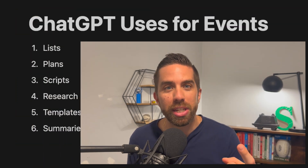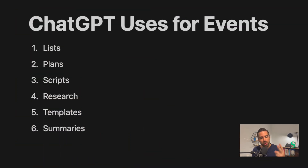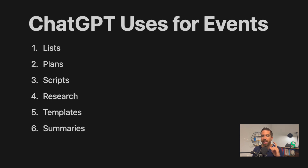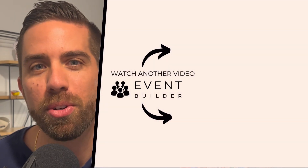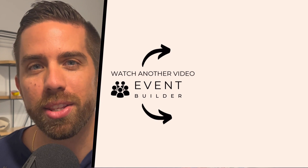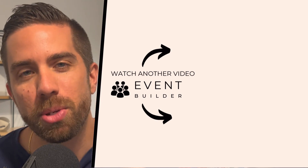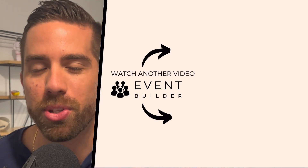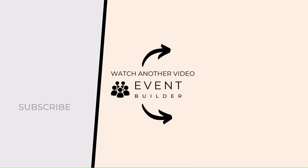So those are the six ways ChatGPT can be used for events: number one is lists, number two is plans, number three is scripts, number four is research, number five is templates, and number six is summaries. If this was helpful for you, be sure to hit the thumbs up, subscribe to the channel, and I'll see you in a future video.